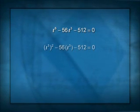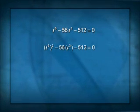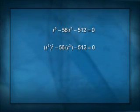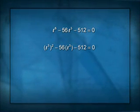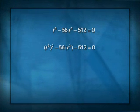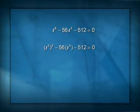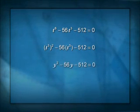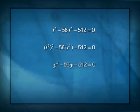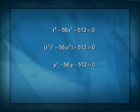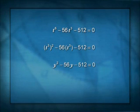It's quadratic in T cubed, by which I mean I could write that as the quantity T cubed squared, that's T to the sixth, minus 56 times the quantity T cubed minus 512 equals zero. And you know what that looks like? That looks like a quadratic equation. In fact, it looks just like Y squared minus 56Y minus 512 is zero if you let Y play the role of T cubed.